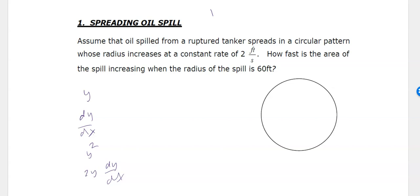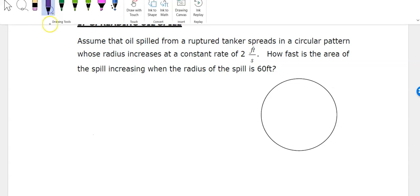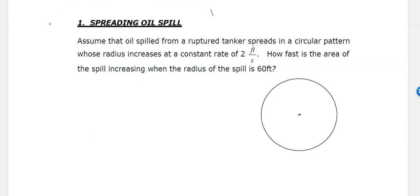The difference here is that each physical quantity we have is going to vary with time. In the case of a circle here, let's read the problem. Assume that oil spilled from a ruptured tanker spreads in a circular pattern whose radius increases at a constant rate of 2 feet per second. How fast is the area of the spill increasing when the radius is 60 feet? It's helpful to label your picture.